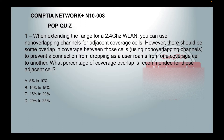When extending the range for a 2.4 GHz WLAN, you can use non-overlapping channels for adjacent coverage cells. However, there should be some overlap in coverage between those cells using non-overlapping channels to prevent a connection from dropping as a user roams from one coverage cell to another. What percentage of coverage overlap is recommended for these adjacent cells?